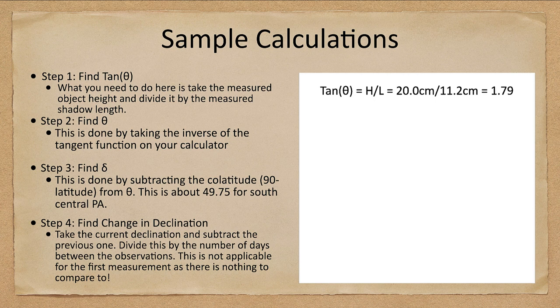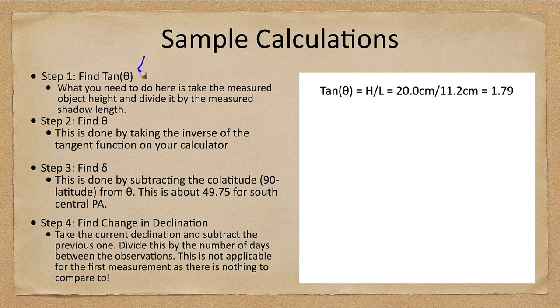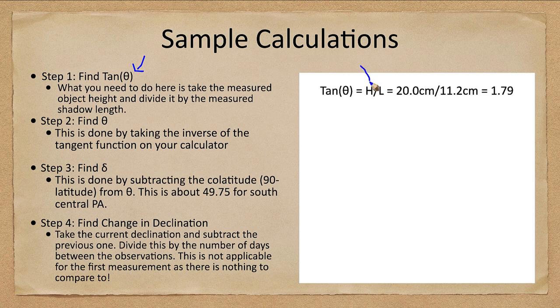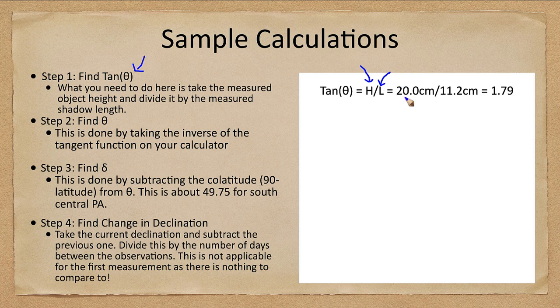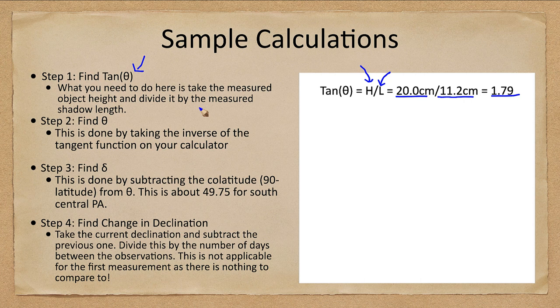I'm going to go through a couple of sample calculations. Step one is to find the tangent of theta. That is the next column in your data table. To find this, all you need to do is take your object height and divide it by the shadow length that you measured. In the case of my data, that will be 20 centimeters divided by 11.22 centimeters, which gives you 1.79.